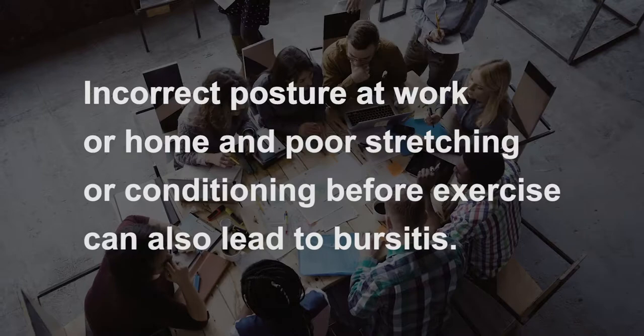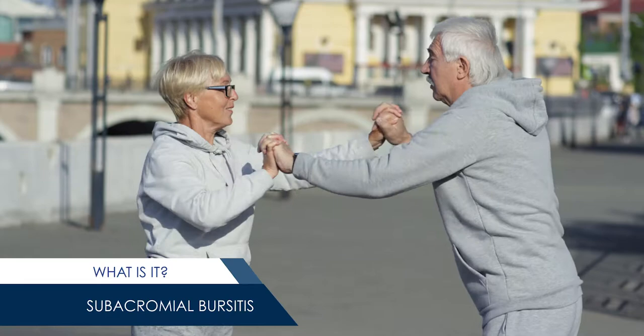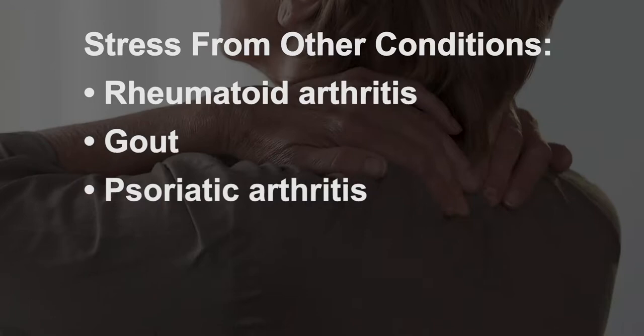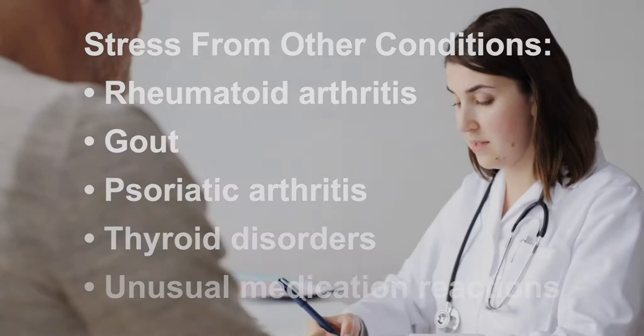Incorrect posture at work or home and poor stretching or conditioning before exercise can also lead to bursitis. An abnormal or poorly placed bone or joint can put added stress on a bursa sac causing bursitis. Stress or inflammation from other conditions such as rheumatoid arthritis, gout, psoriatic arthritis, thyroid disorders, or unusual medication reactions may also increase a person's risk. In addition, an infection can occasionally lead to inflammation of a bursa.